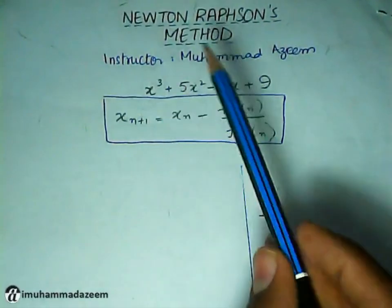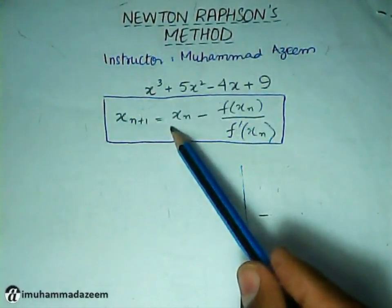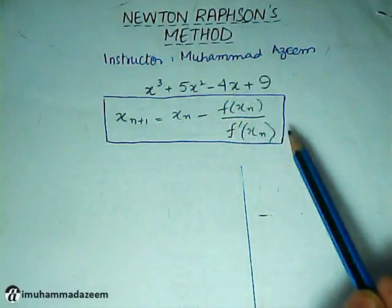The formula is X n+1 equals X n minus f(X n) over f prime of X n.